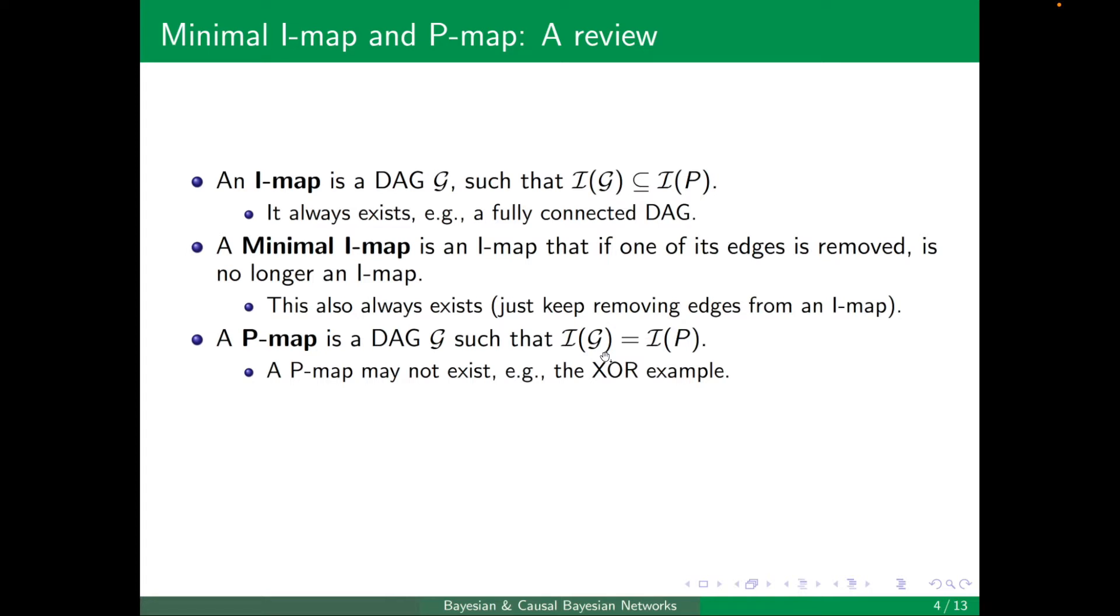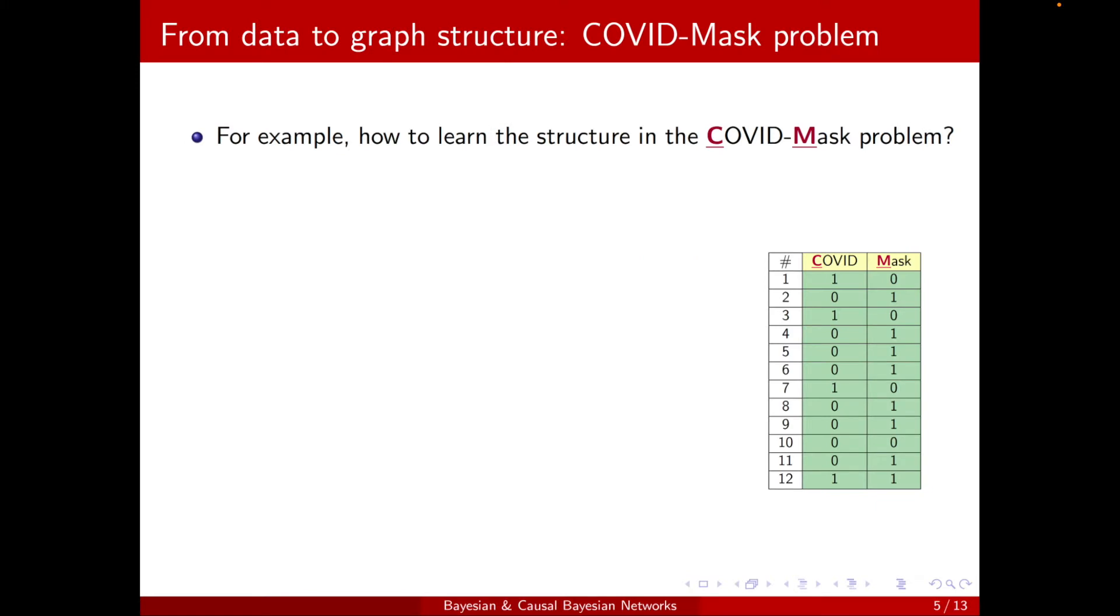Now, a P-map may not exist. One example was the XOR example. And the best structure for us is the P-map, because it captures all conditional independencies I(P).